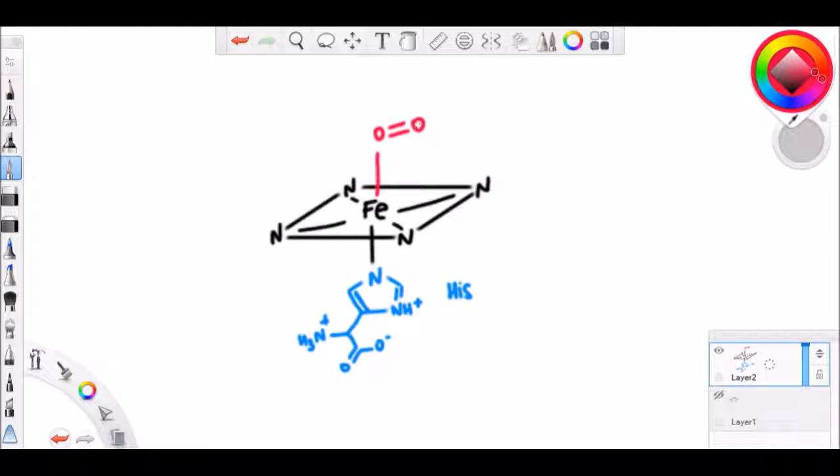Two key points: the heme iron is always in the ferrous state in hemoglobin and myoglobin. When in the ferrous state, iron is bonded to oxygen, it is oxygenated, but it is not oxidized to the ferric state.